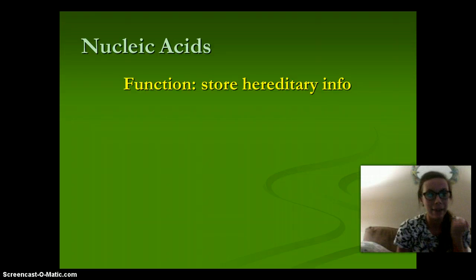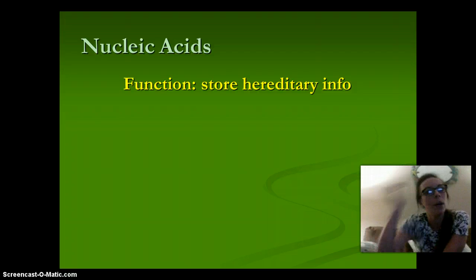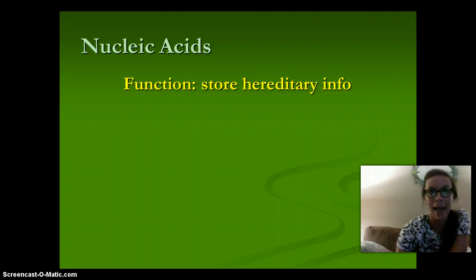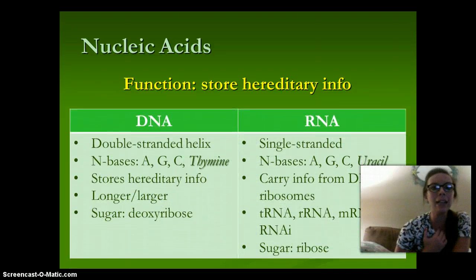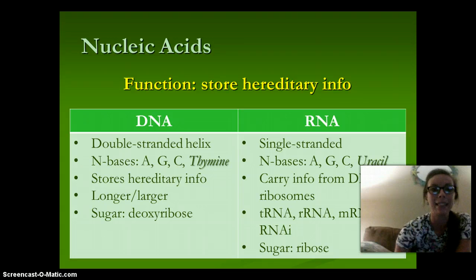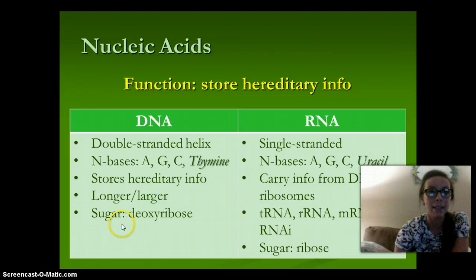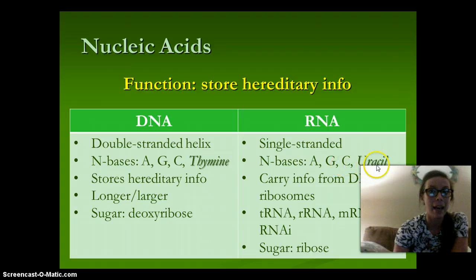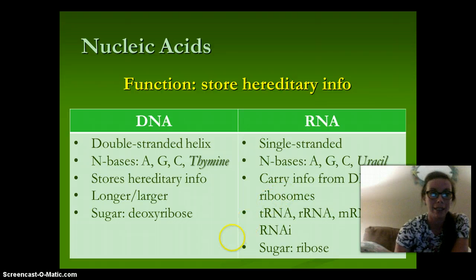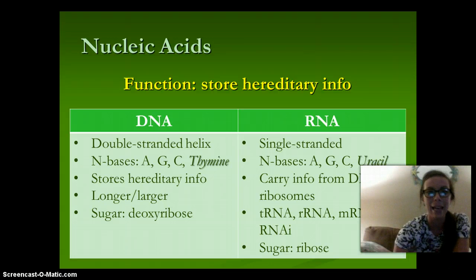Our nucleic acids store hereditary information — so our DNA and RNA. DNA is a double-stranded helix with nitrogen bases A, T, C, and G, contains thymine, stores heredity, and is longer and larger than RNA; its sugar is deoxyribose. RNA is single-stranded with nitrogen bases A, G, C, and U (uracil); it carries information from the DNA to the ribosomes. There are tRNA, rRNA, mRNA, and RNAi, and the sugar is ribose. We'll talk more about nucleic acids and proteins in the next lecture.